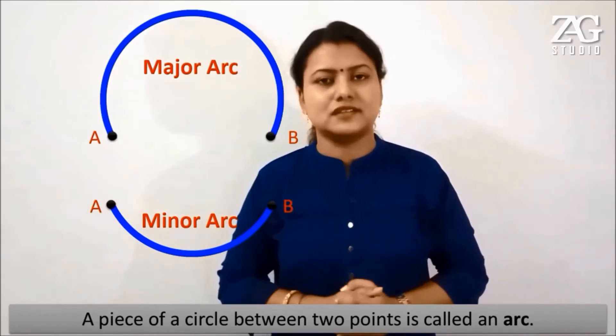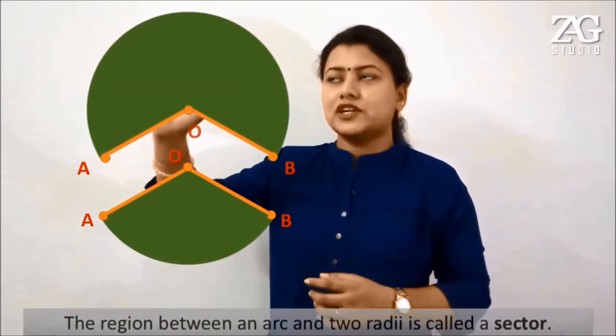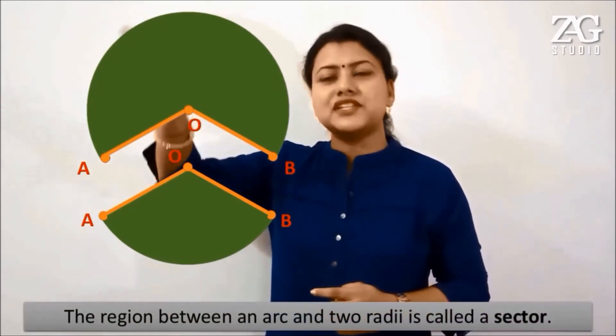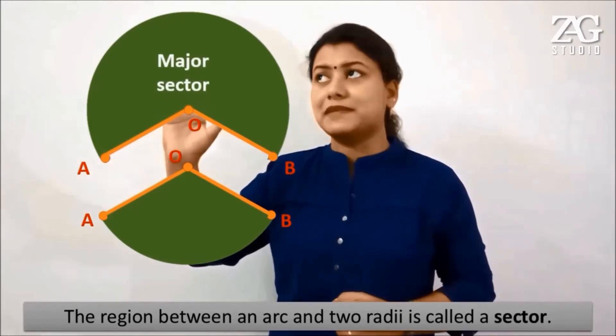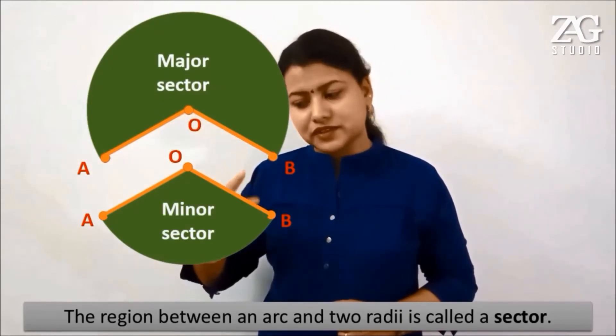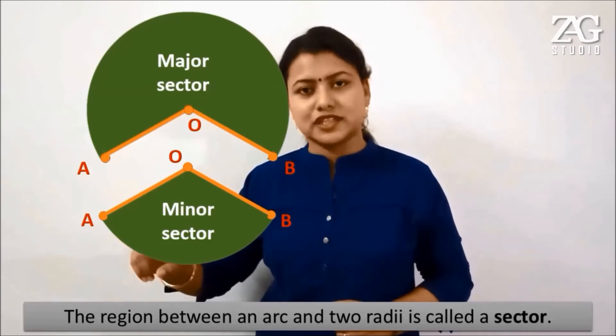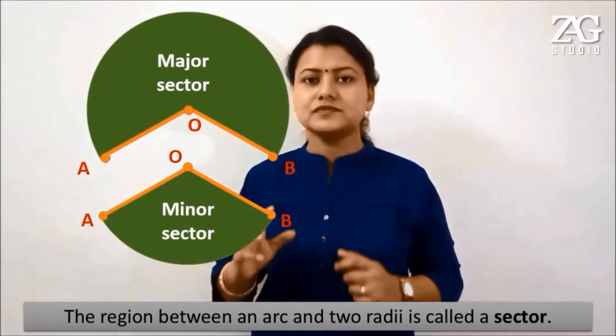Next, if I take two points on the circle and join them to the center, I get two radii. Looking at the regions formed: the part surrounded by the major arc and the two radii is the major sector, and the part with the minor arc and the two radii is the minor sector. That's all for this video; in the next video we will discuss more topics on circles.